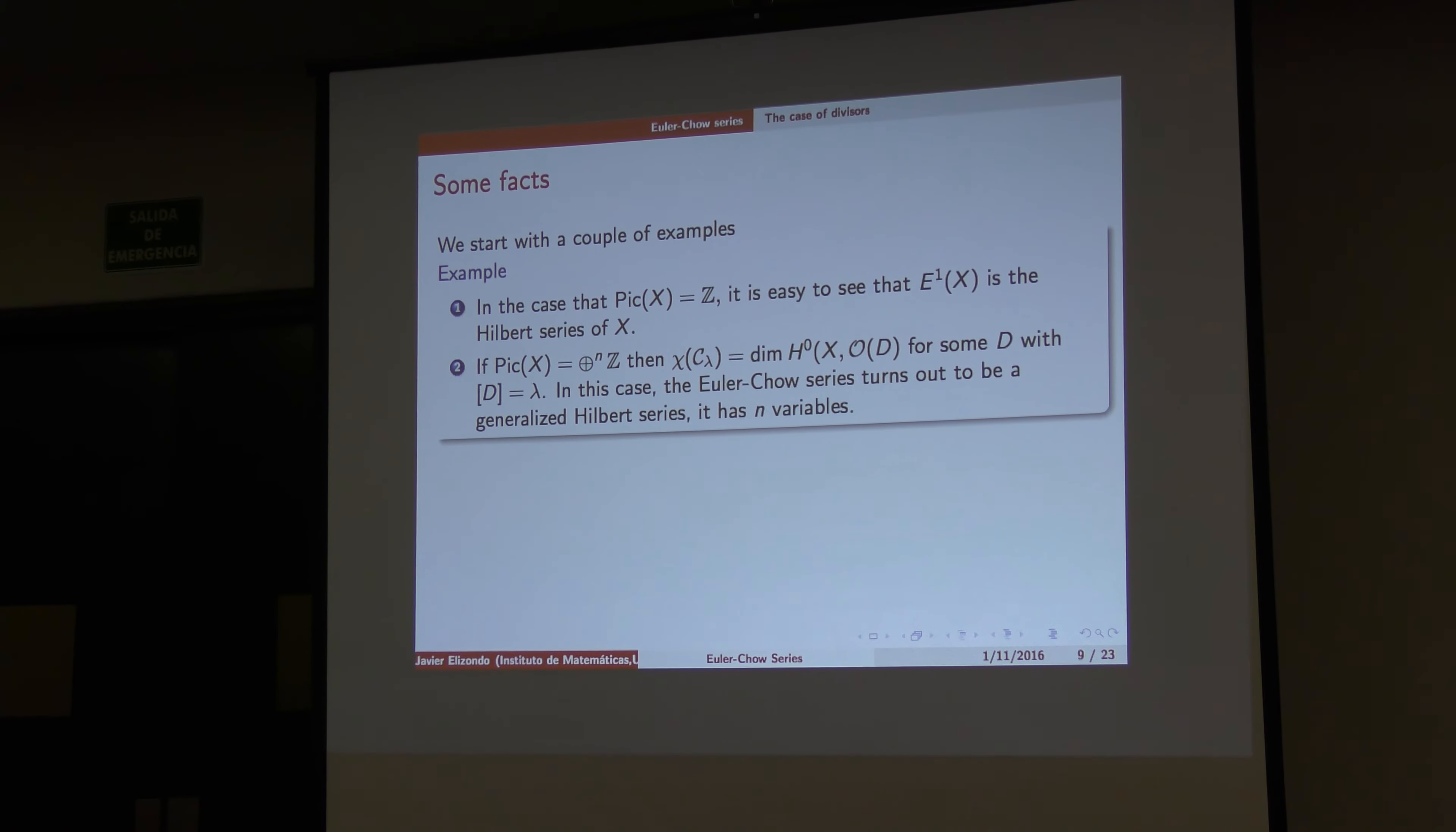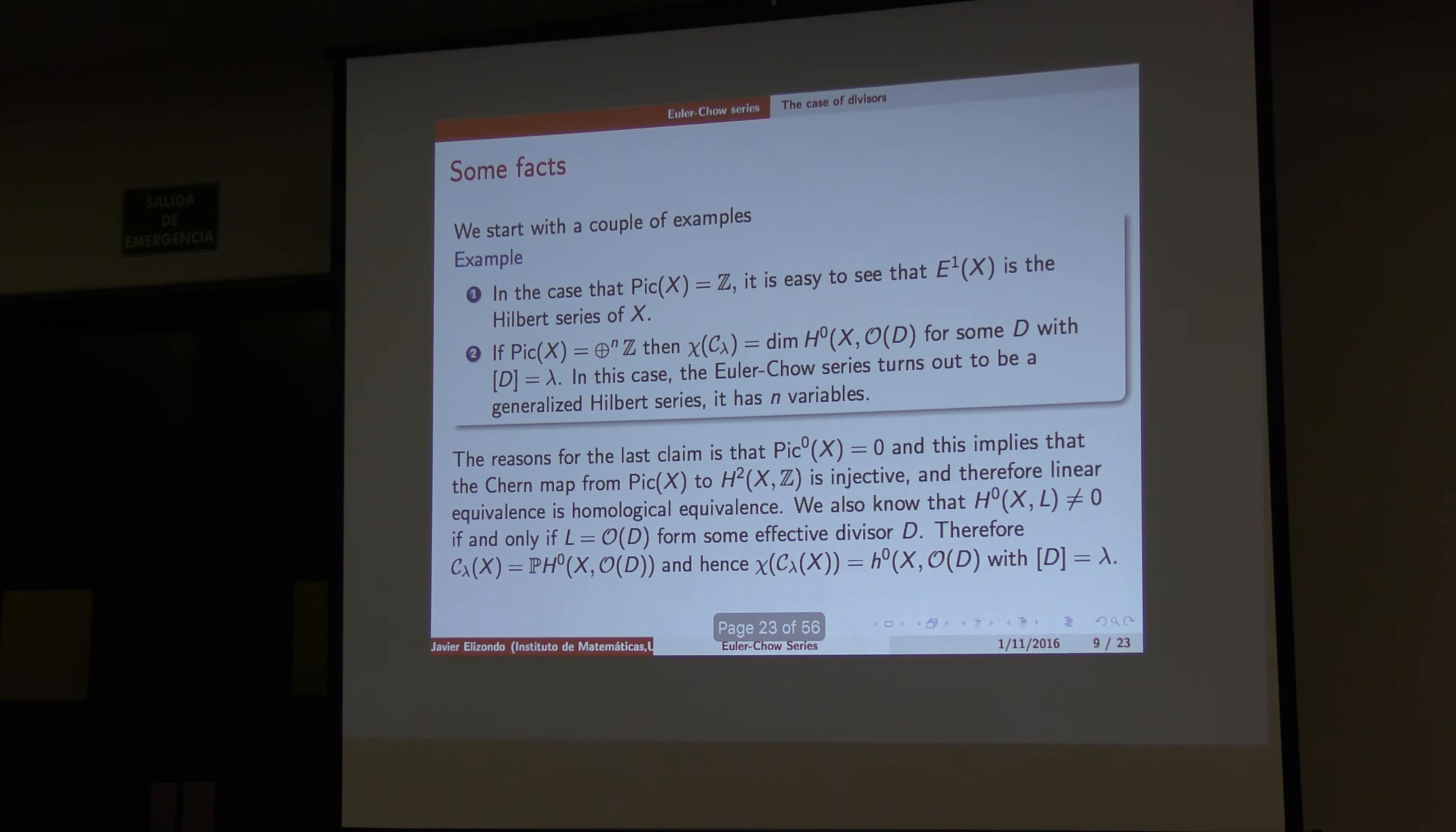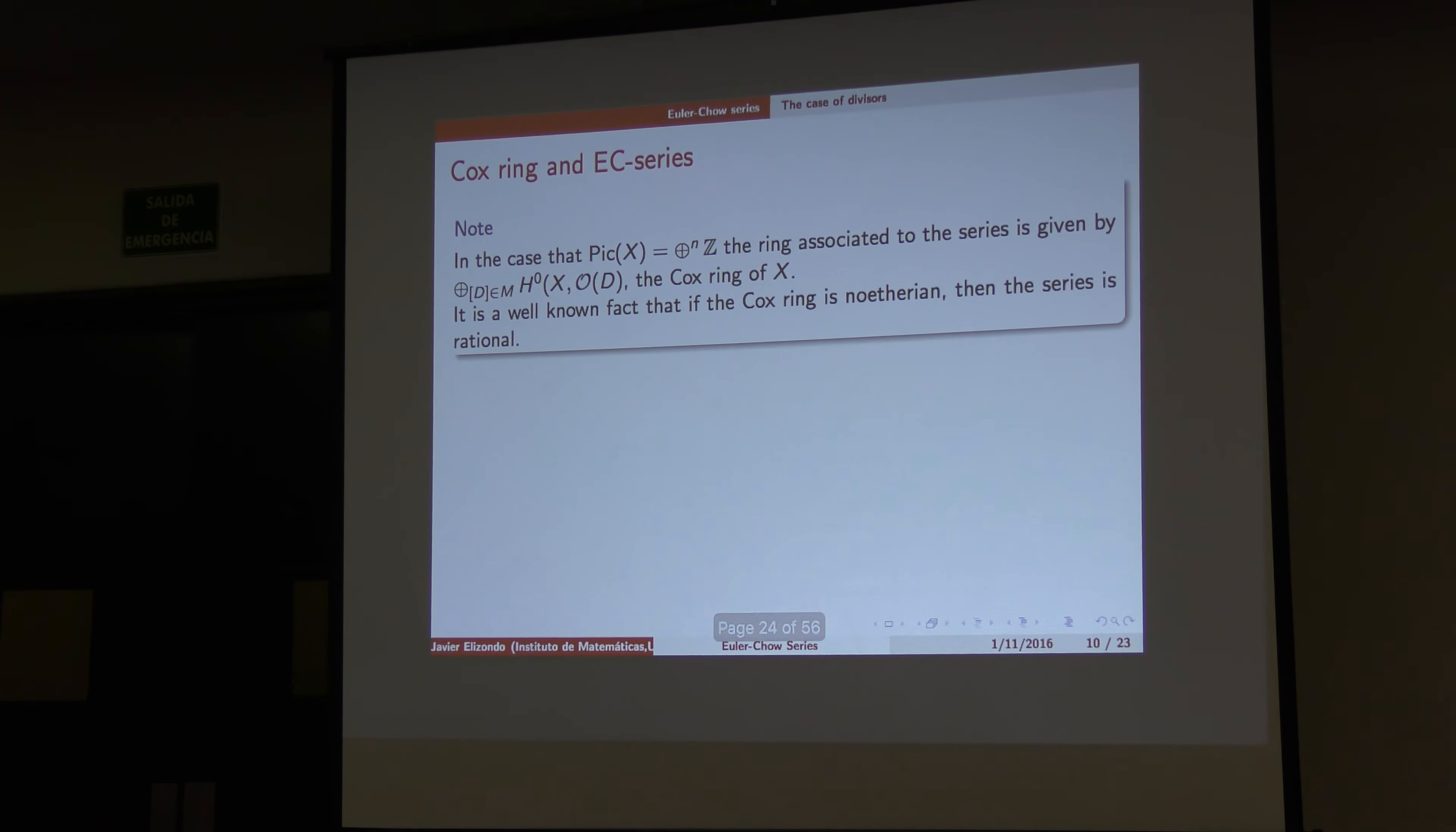The reason for this is because the Picard is like this one, so the Euler characteristics are going to be the dimension of zero. I don't understand why it's too much in this case. And the reason for this is that the map from Picard to the divisor classes is injective, and therefore what you have is this, and then the Euler characteristics are just the dimension of this linear space.